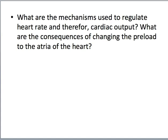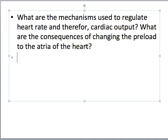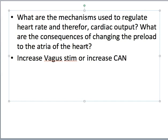What are the mechanisms used to regulate heart rate and therefore cardiac output? What are the consequences of changing the preload to the atria of the heart? The first part is always going to be a mechanism. What happens if we increase vagus nerve stimulation or increase cardiac accelerator nerve stimulation? Can you think your way through the consequences? This is independent of what's going on inside the body — you can think yourself into slowing your heart rate, which you can do before every exam, and you can think your way into stimulating your heart rate. All you have to do is think about a test.